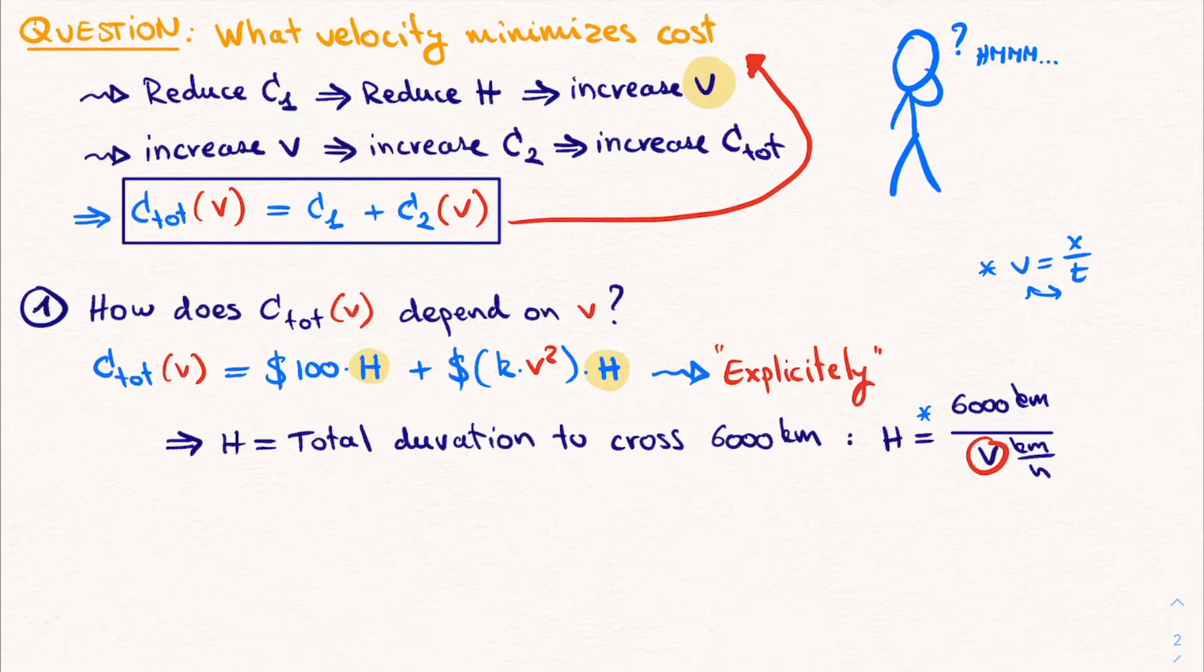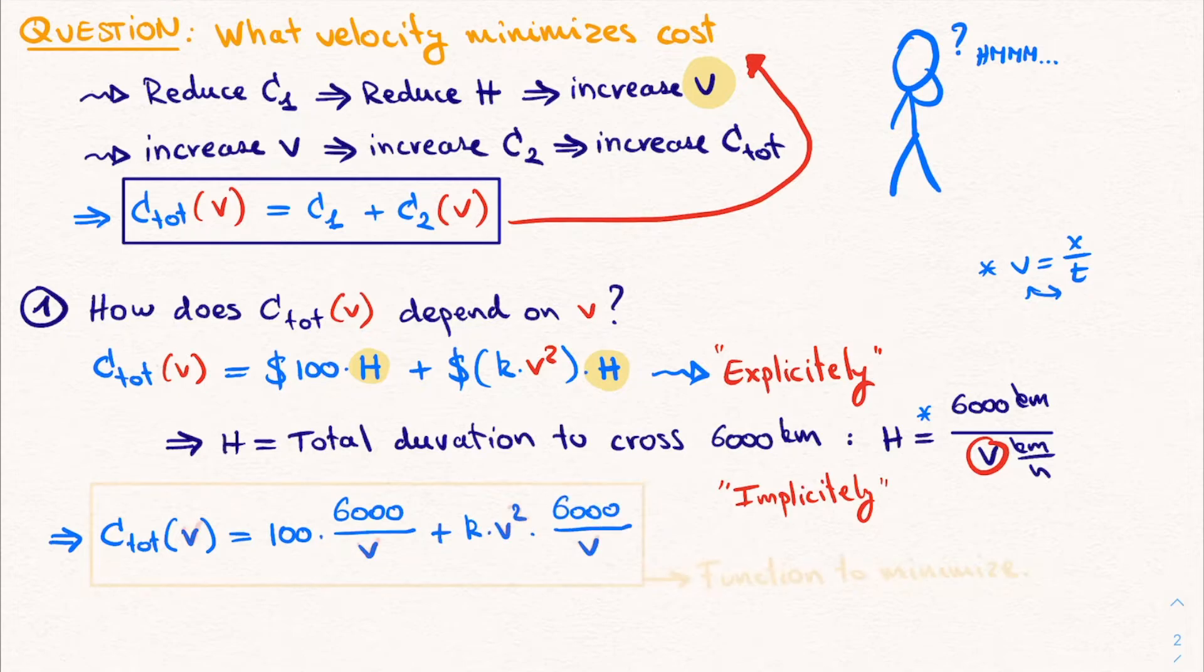Using this formula for capital H, we can fill it in in our total cost function, such that we get a function that is only dependent on the velocity V. If we omit the units for notational ease, we get that the total cost function, which is a function of the velocity, is equal to 100 times 6000 divided by V plus K times V squared multiplied by 6000 divided by the velocity V.